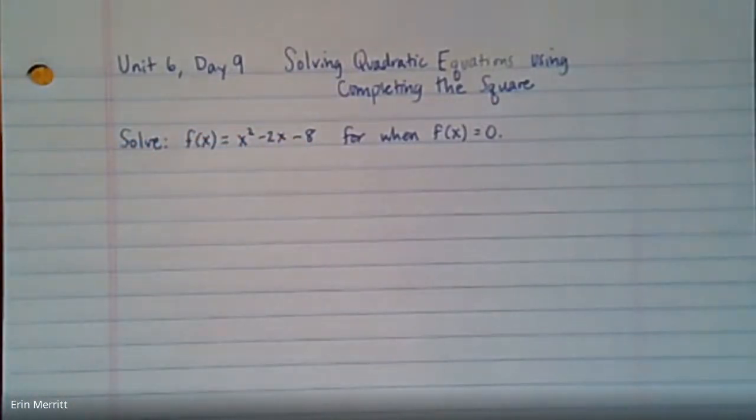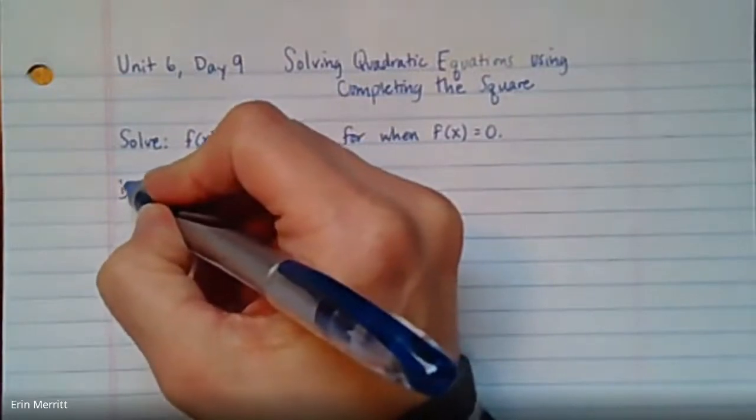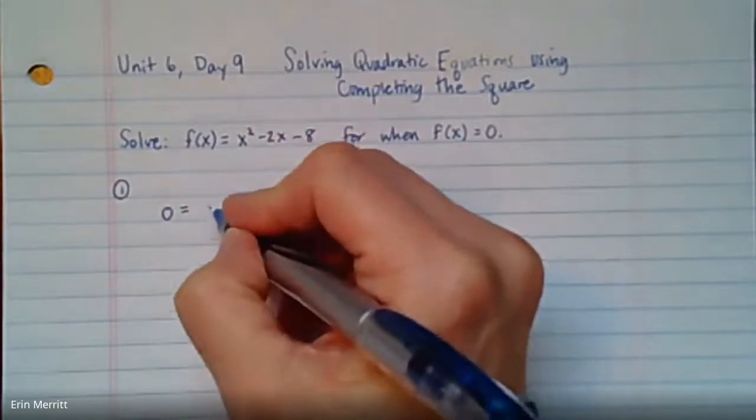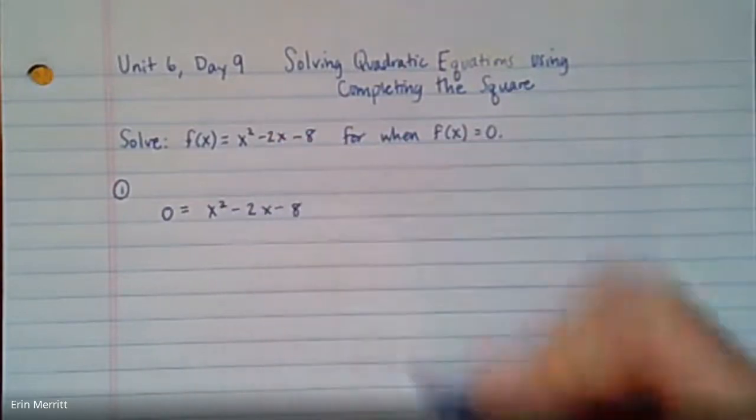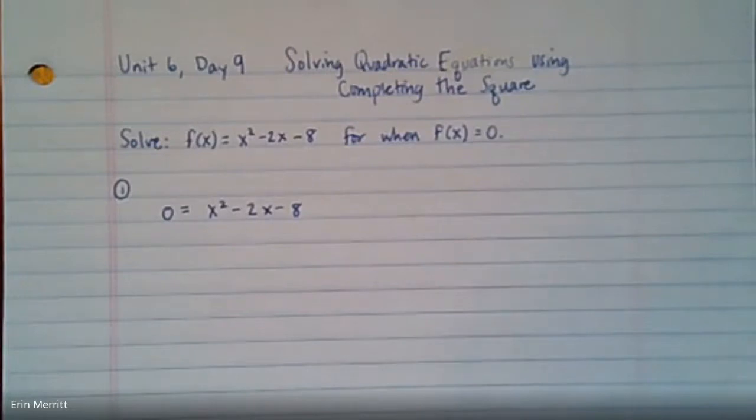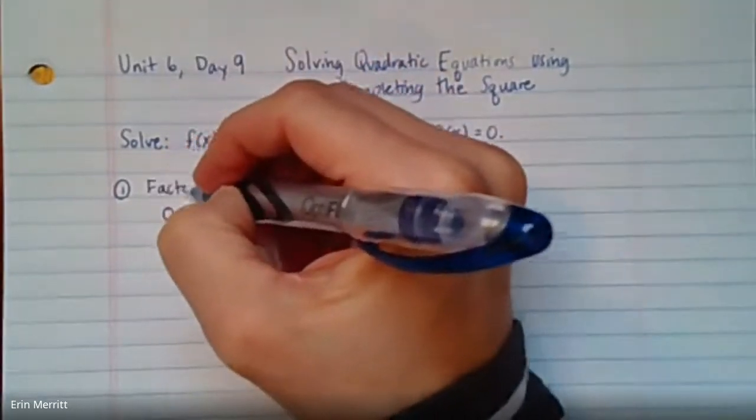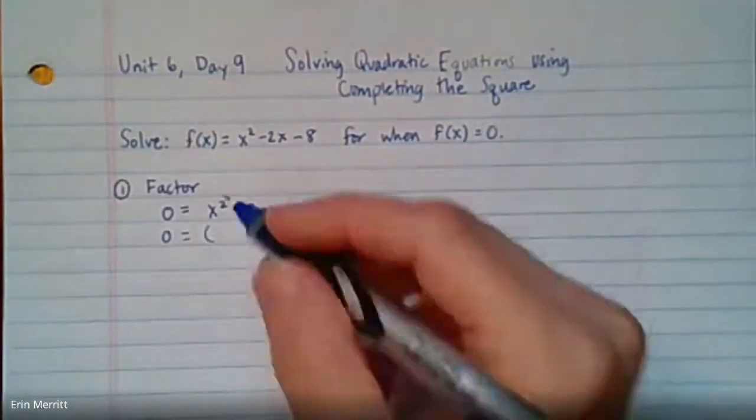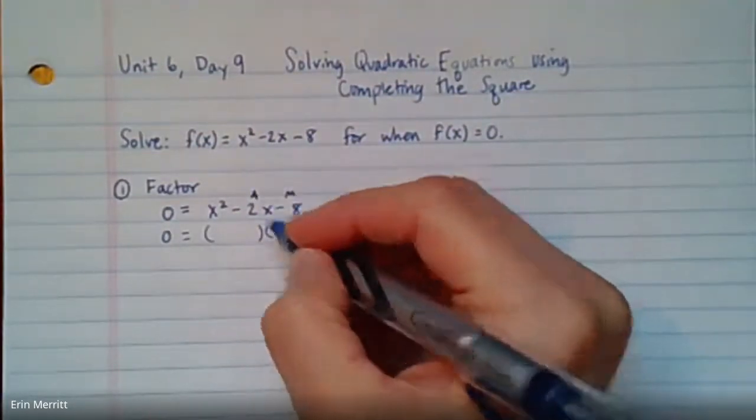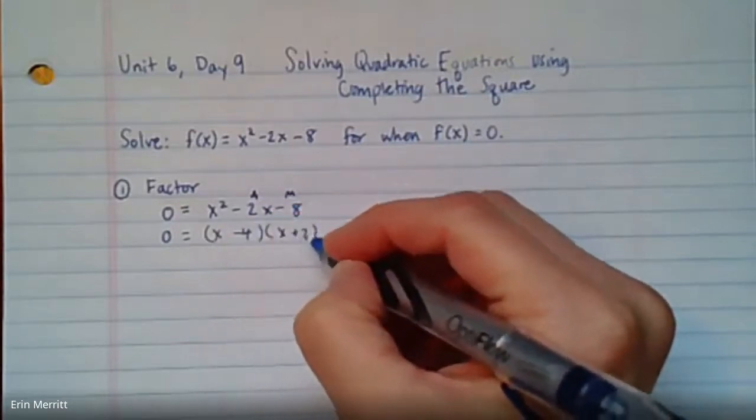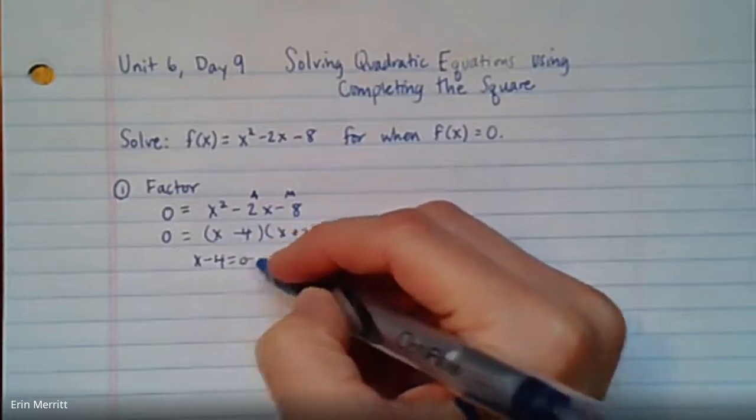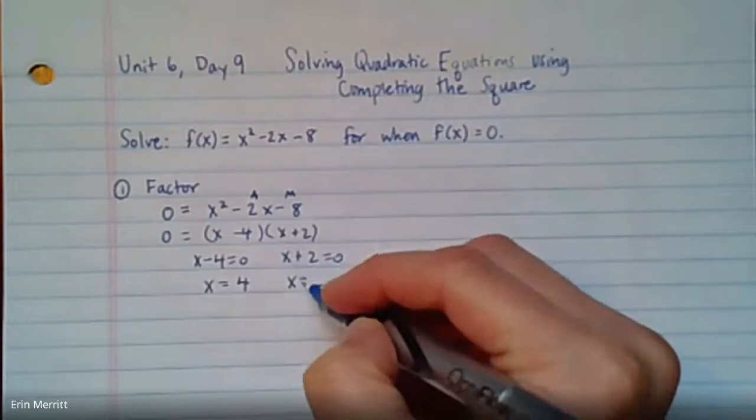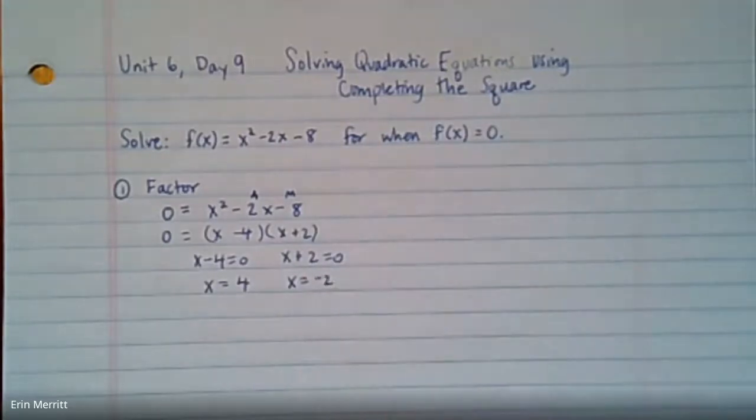There's two ways we can do this. First, put in zero. This is something we're really familiar with, the idea that we can just factor. If it's factorable, we can say what adds to this, multiplies to this. This would go x minus 4, x plus 2. We would set each factor equal to zero and we would end up with these two solutions right here.